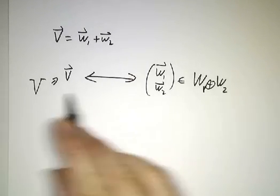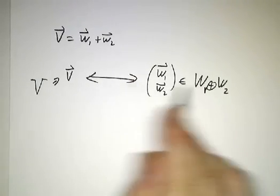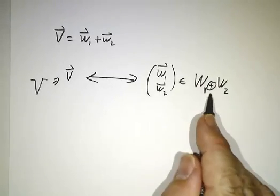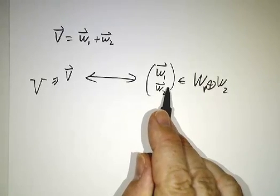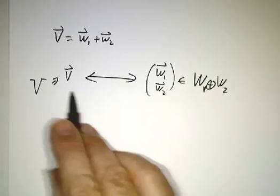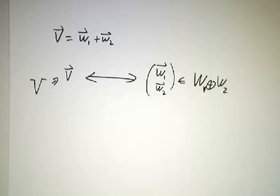This is sitting inside V. So if V is in one-to-one correspondence, is isomorphic to these, this correspondence respects addition, it respects scalar multiplication, and that's what we mean by the internal direct sum.